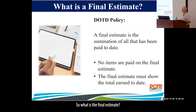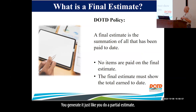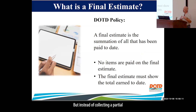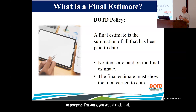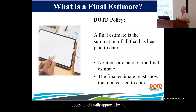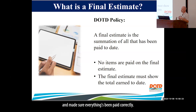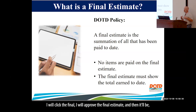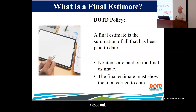A final estimate is a summation of everything that's been paid over the project. You generate it just like you do a partial estimate — instead of clicking partial or progress, you click final. There should be no money on the final. It doesn't get finally approved until we've gone through the audit and made sure everything's been paid correctly. Once everything's been paid correctly, I will approve the final estimate and the project will be closed out.